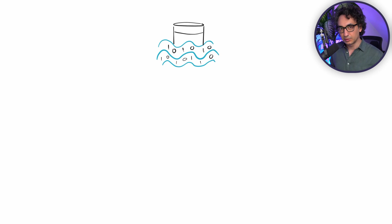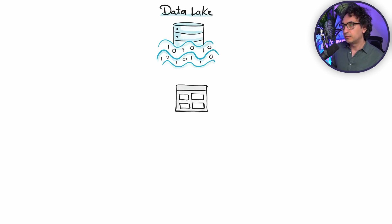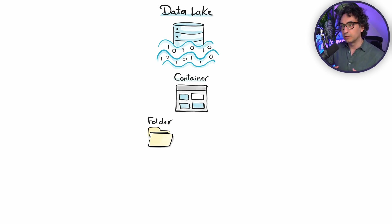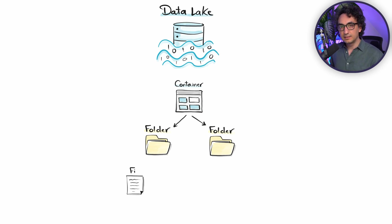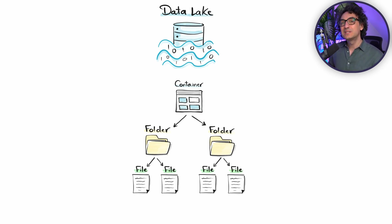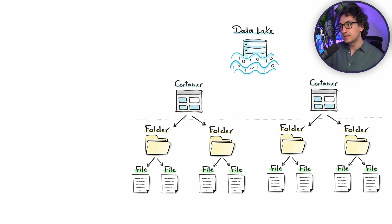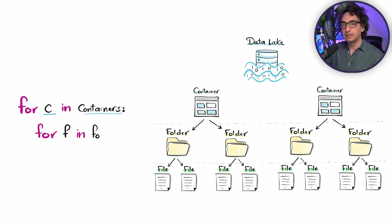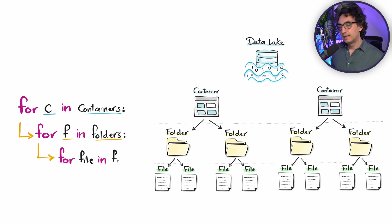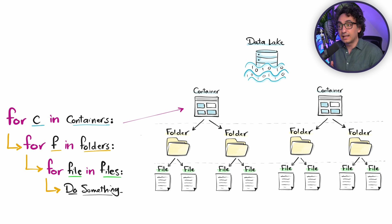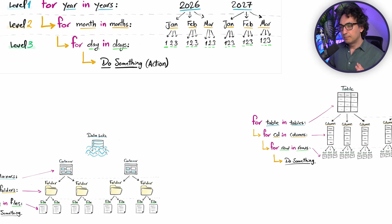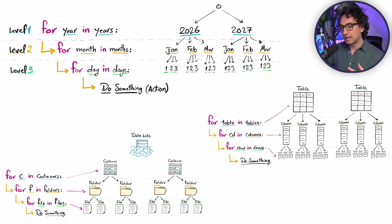Another real-world example of hierarchy is working with data lakes. In Azure, for instance, you might have containers, inside each container different folders, and inside those folders different files. We use nested for loops to navigate through this hierarchy to reach those files and then load or transform them. The rule is simple: if you have different layers and a hierarchical structure, you'll end up using nested loops to navigate through it.